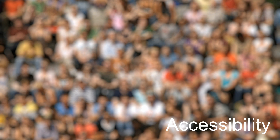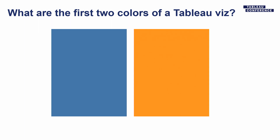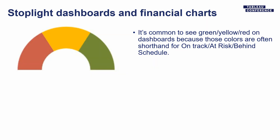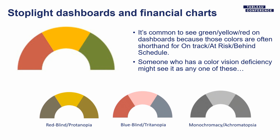So we're going to pivot and talk about accessibility briefly. Can anybody tell me what the first two colors of a Tableau viz are? Blue? Orange? You see these everywhere. Why are these two the default colors in Tableau vizes? It's color blindness. It's really common for us to use stoplight colors on dashboards because it's shorthand — at risk, on track, behind schedule. However, if you have a color vision deficiency, you might see one of several different combinations. Nine percent of the population has one of these deficiencies.